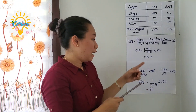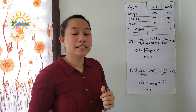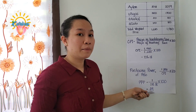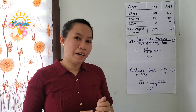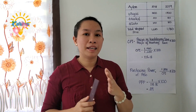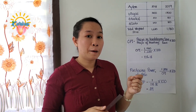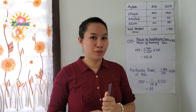Pinapakita nito na ang halaga ng 1 peso noong taong 2018 ay nagiging 84 cents na lamang. Kaya ang quantity ng produkto na mabibili natin noong mga nakaraang taon ay mas malaki kumpara sa mabibili natin sa kasalukuyang taon, dahil bumaba ang halaga ng purchasing power of peso. Ito ay pangunahing dahil sa pagkakaroon ng inflasyon.